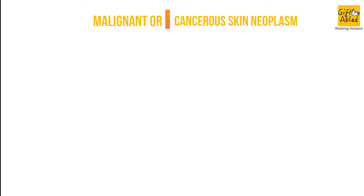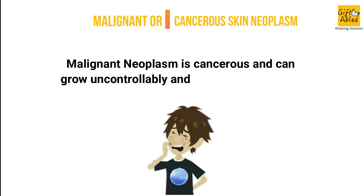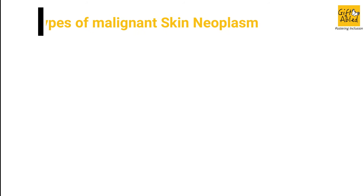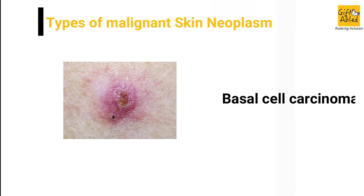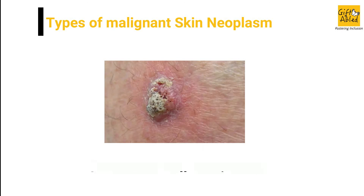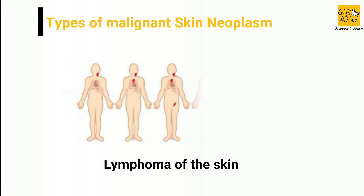Malignant or Cancerous Skin Neoplasm. Malignant Neoplasm is cancerous and can grow uncontrollably and invade other organs producing new tumors. Types of Malignant Skin Neoplasm include Basal Cell Carcinoma, Squamous Cell Carcinoma, Melanoma, and Lymphoma of the Skin.